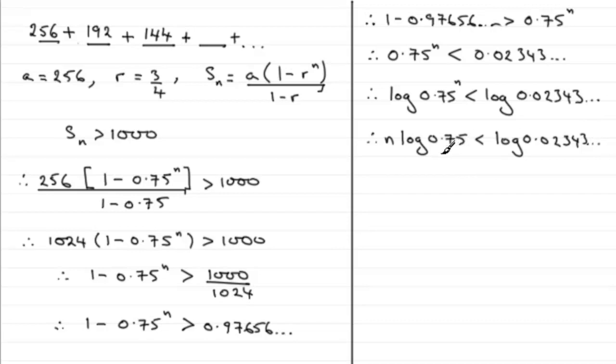Now this is the bit you've got to take care about. I often find so many people do not notice this bit. We're going to divide both sides by the log of 0.75, but the log of 0.75 doesn't look as if it's a negative number. You check it out on your calculator—it is. And that means we've got to divide by a negative number, and if you divide by a negative number, remember we turn the inequality round. So we get that n is greater than the log of 0.02343 and so on, divided by the log of 0.75.